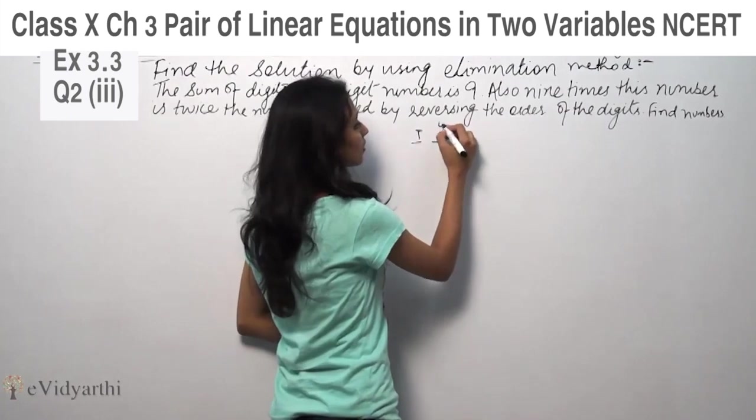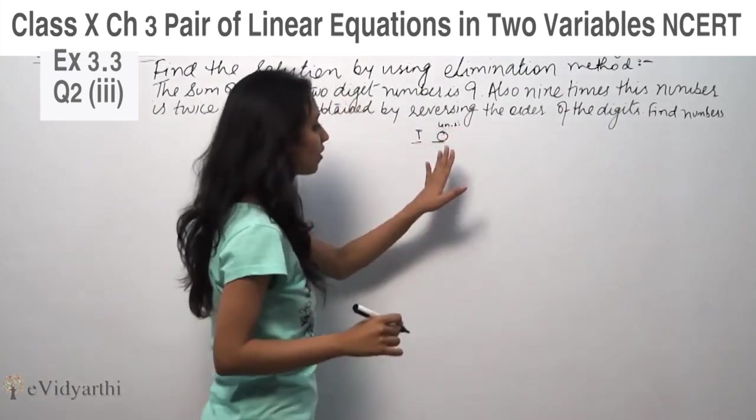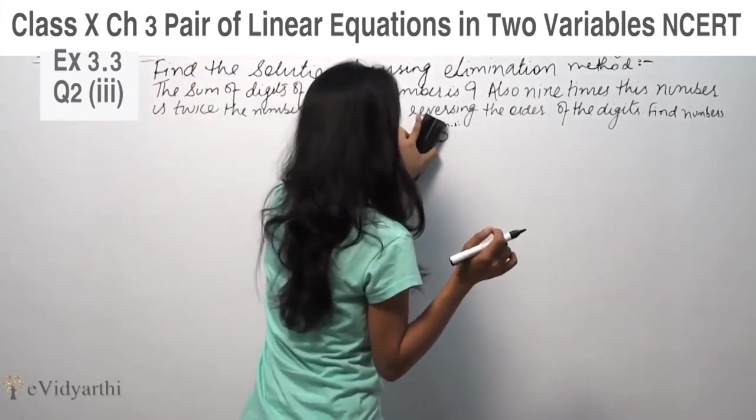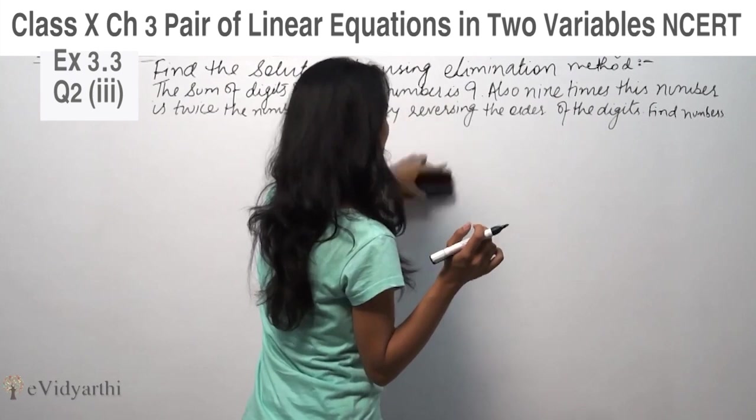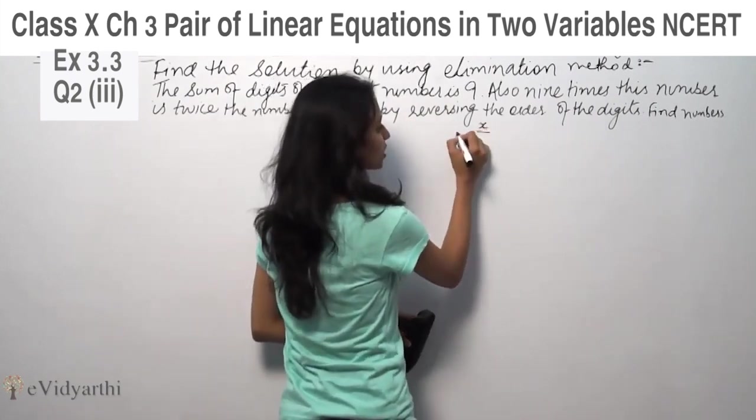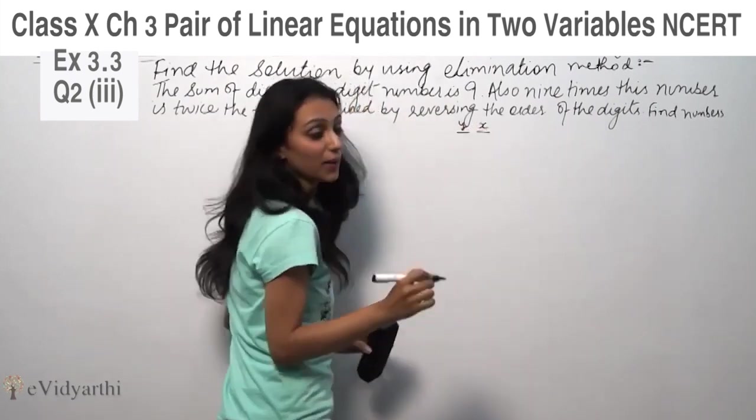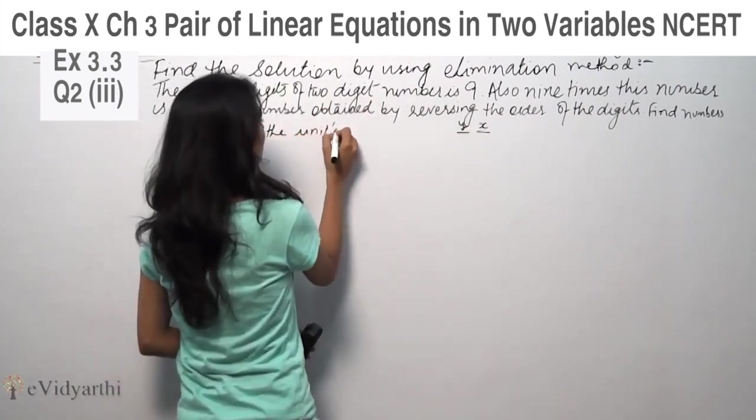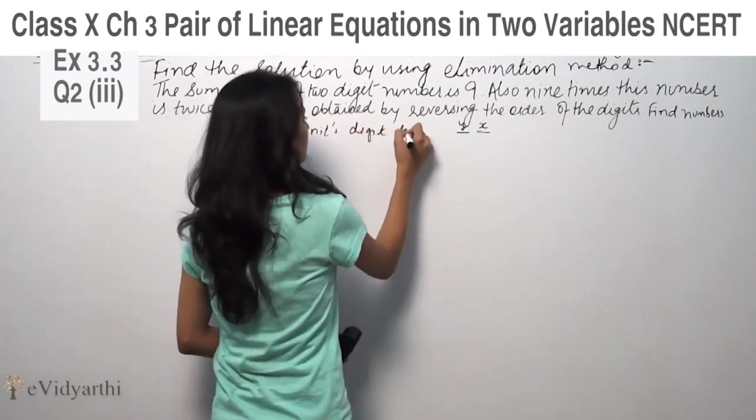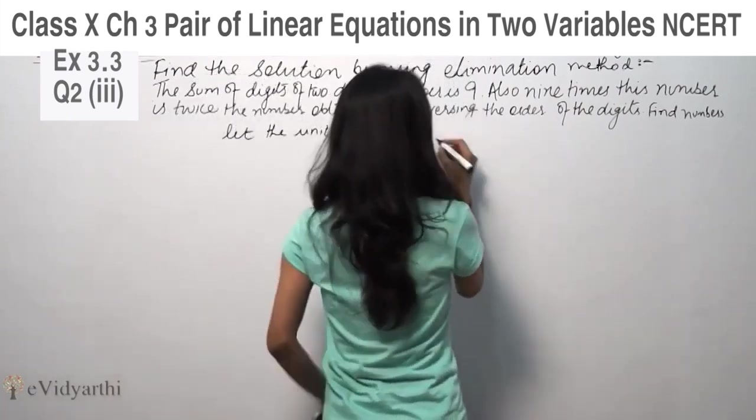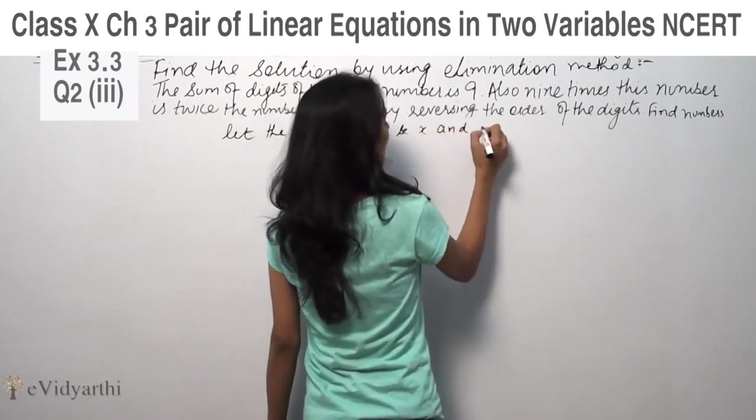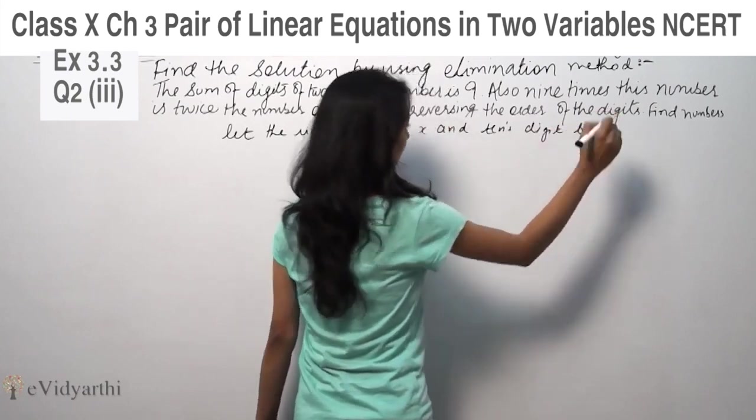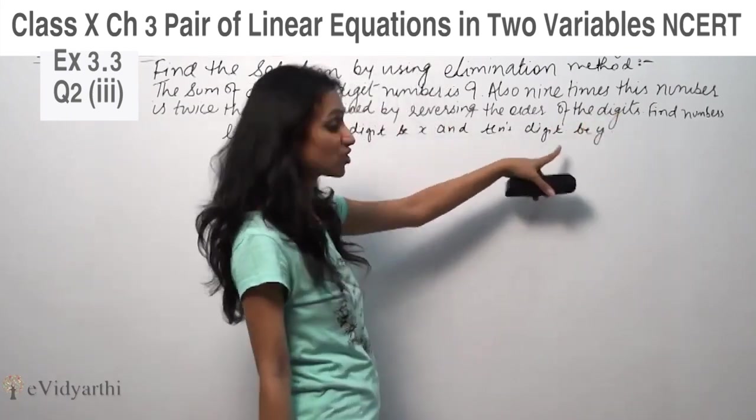So this one place is units place and this one is tens place. So first of all, let us know that the number has two digits. So suppose that we have units place as x and tens place. So let the units digit be x and tens digit be y.